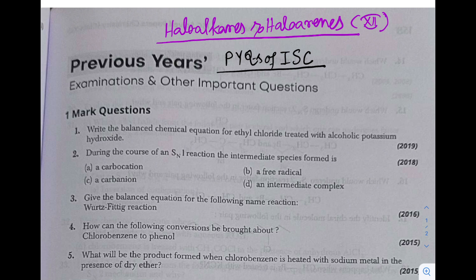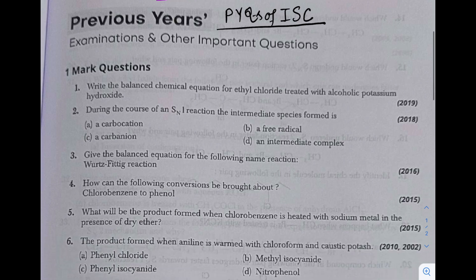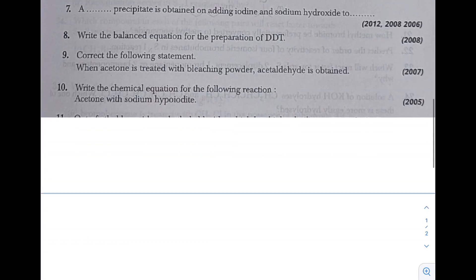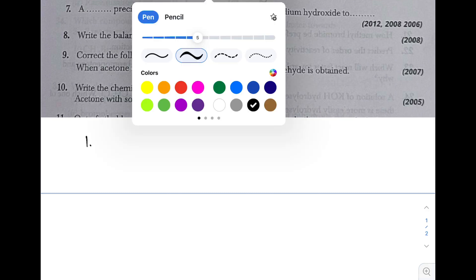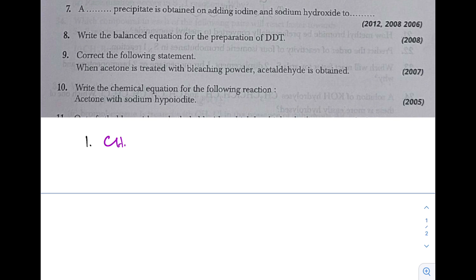Let's begin with Question 1. Write the balanced chemical equation for ethyl chloride treated with alcoholic potassium hydroxide. So when ethyl chloride reacts with alcoholic KOH, Question 1: CH3-CH2-Cl.